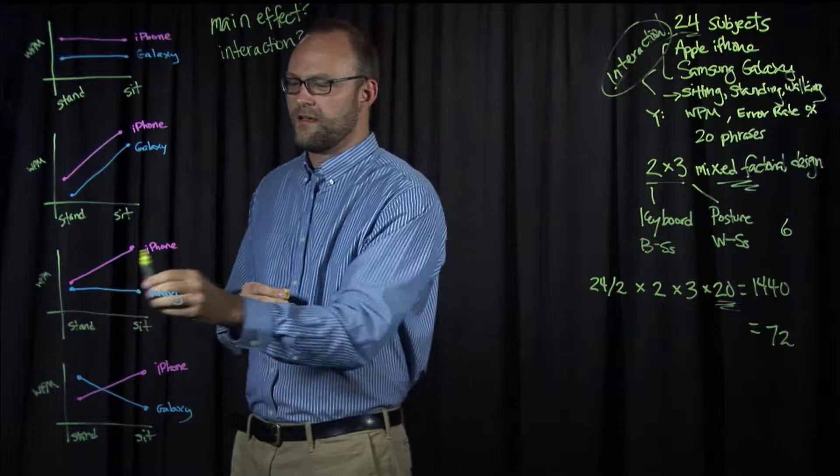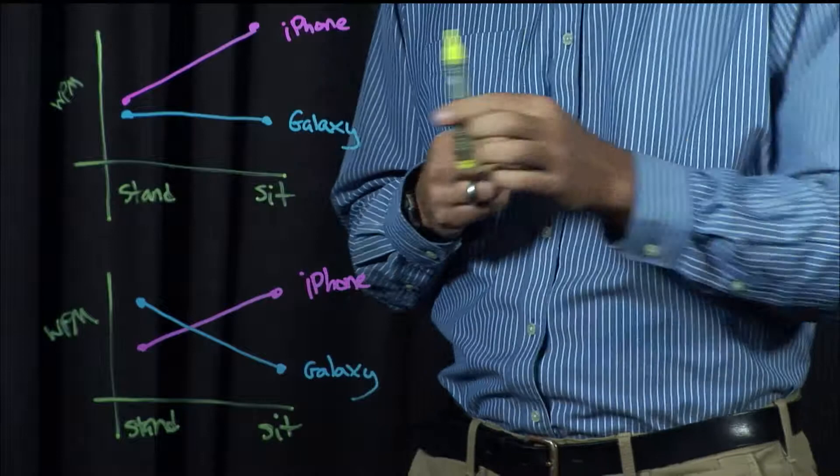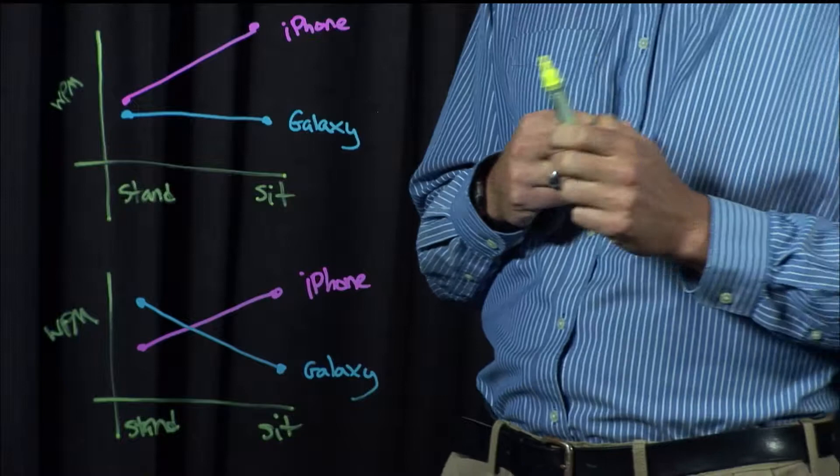Let's consider this third graph. Here we see what are sometimes called alligator jaws. In standing, both of the conditions, both of the keyboards are basically the same, very close in performance. But in sitting, the iPhone has now become differentially better than Galaxy, which actually hasn't improved. So let's go through our three questions. Is there a main effect of keyboard?